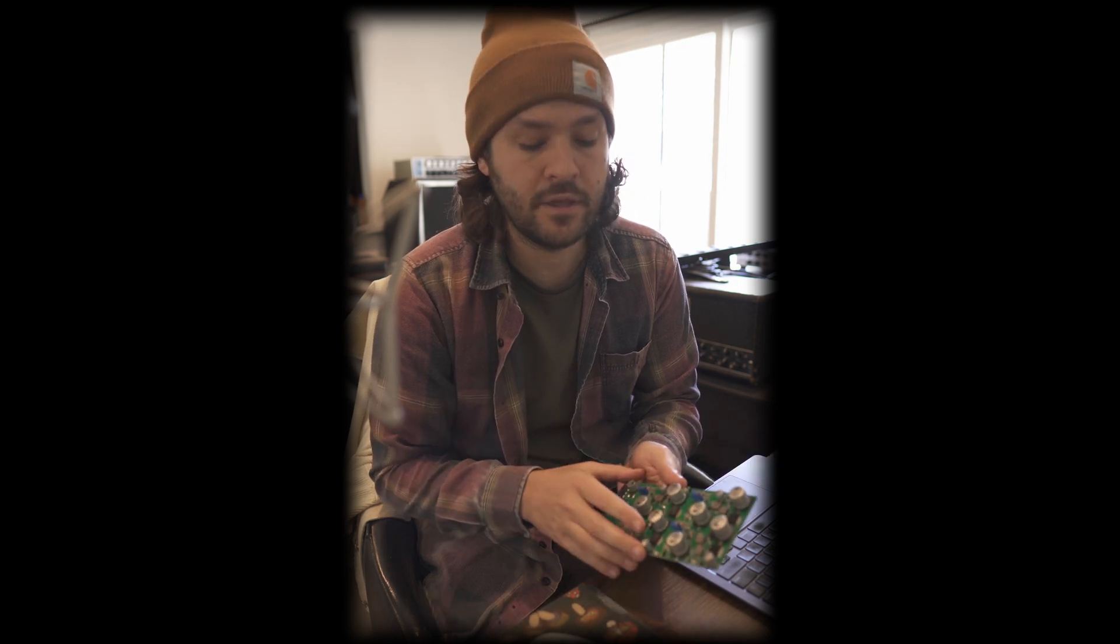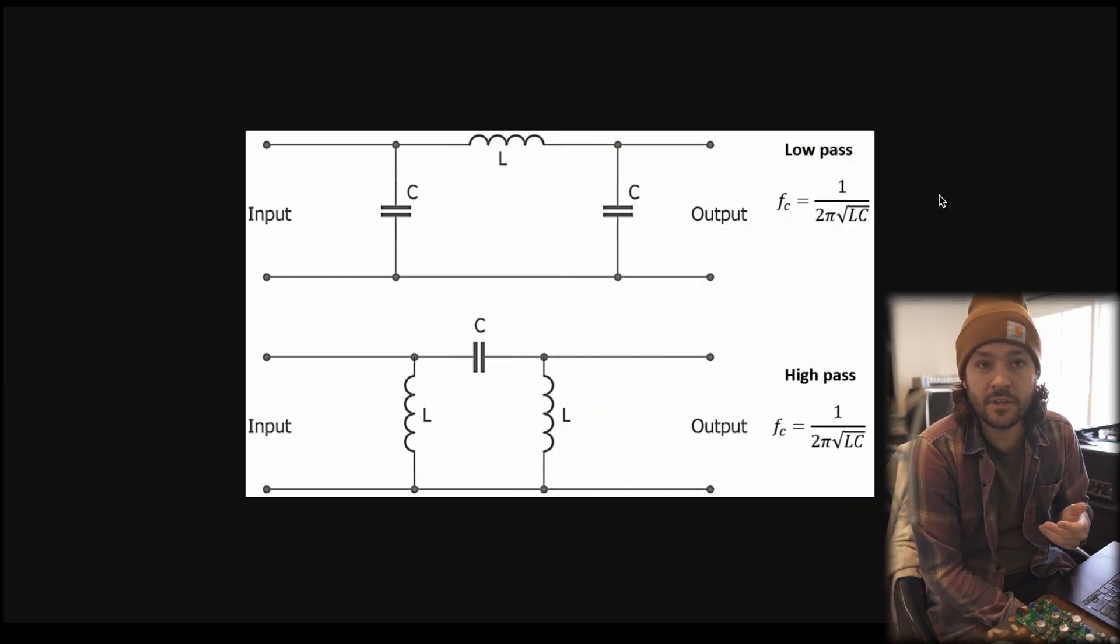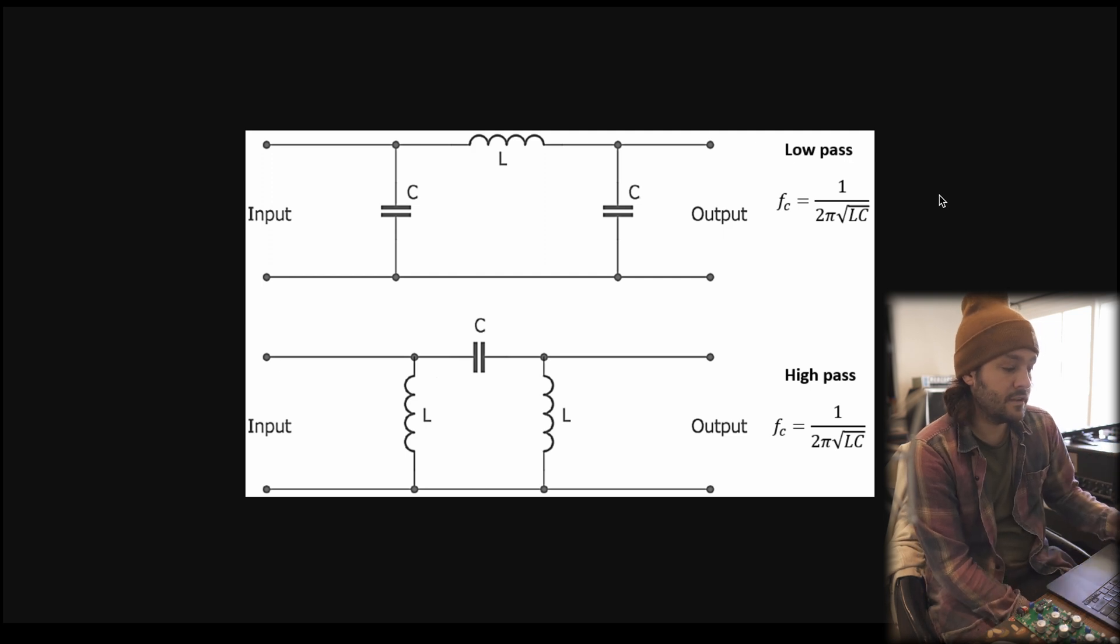What is a pi filter? We simply just call it that because it looks like the Greek letter pi. There are three components and in this case I'll be doing that top one there which is a low pass, so it's also called a CLC filter. We start with an input capacitor, then we hit an inductor in the middle, and then we end with another output capacitor. You could also do a high pass variation if you wanted to where you flip the L's and the C's. The cutoff frequency calculation is the same for both of them.